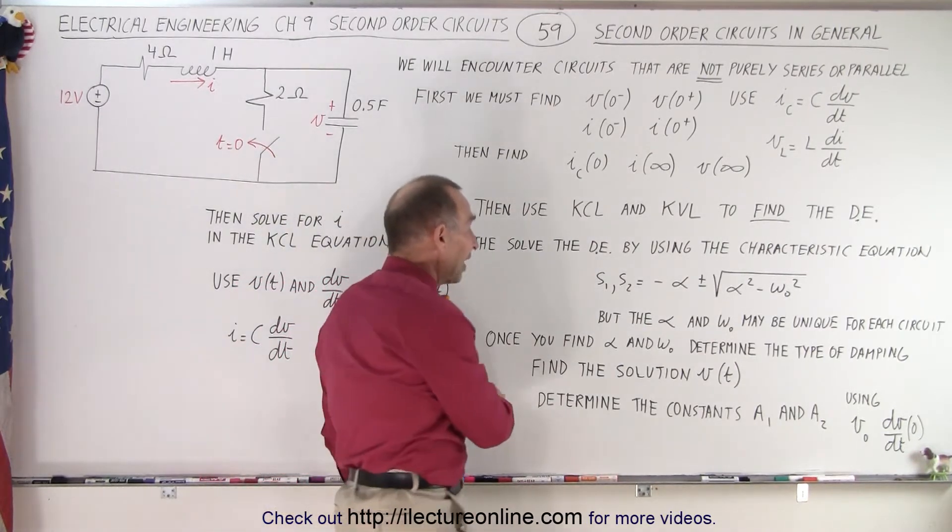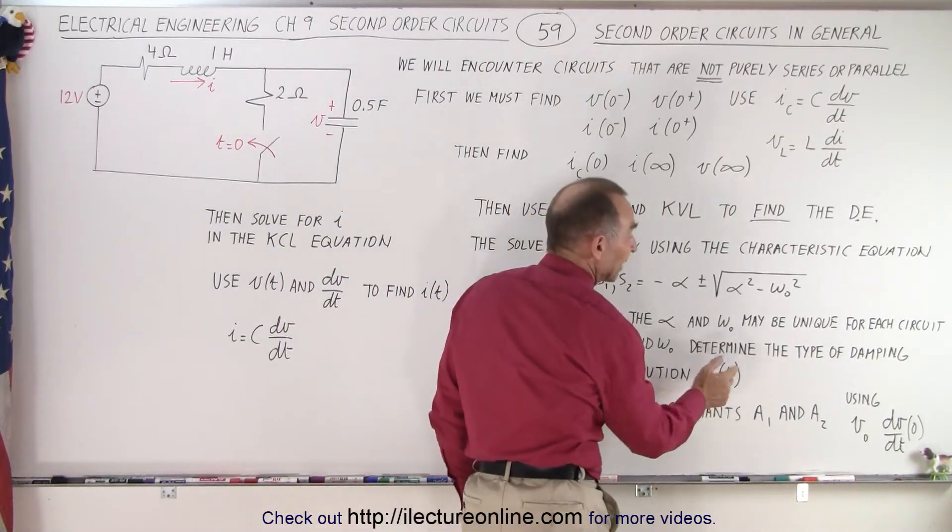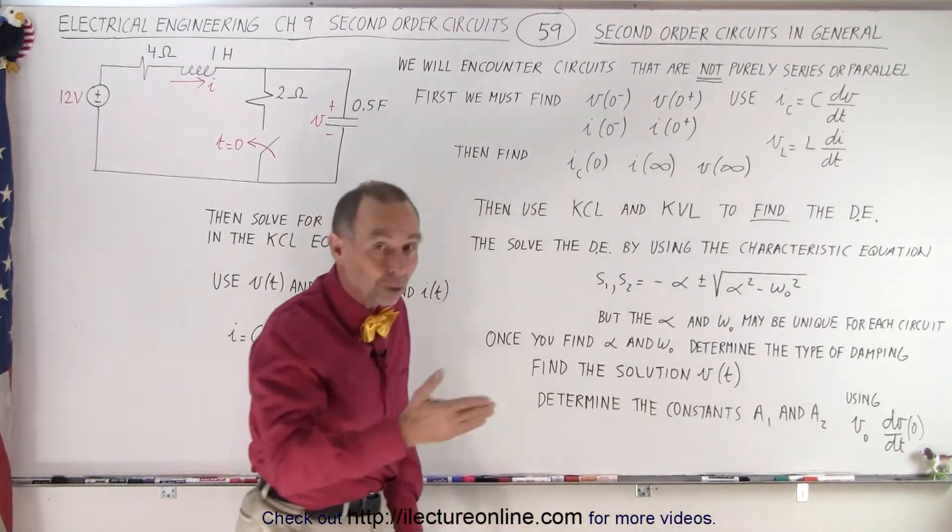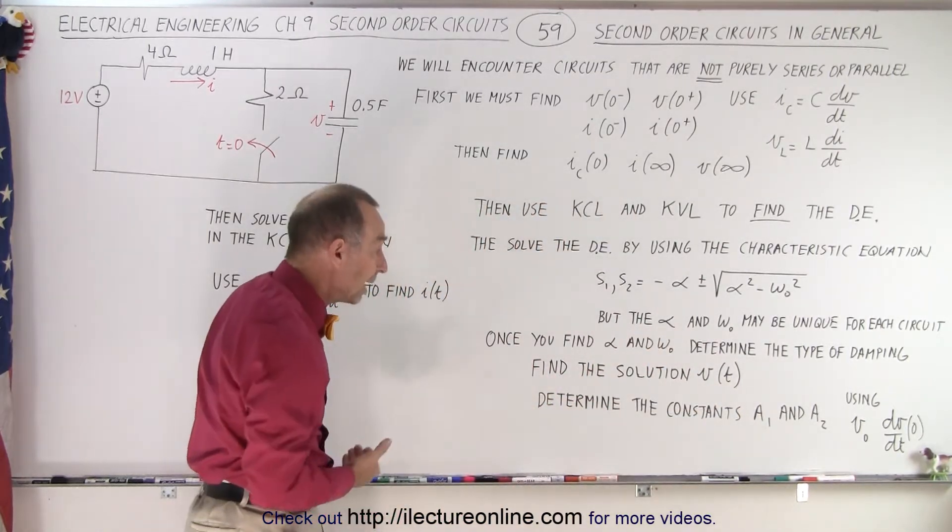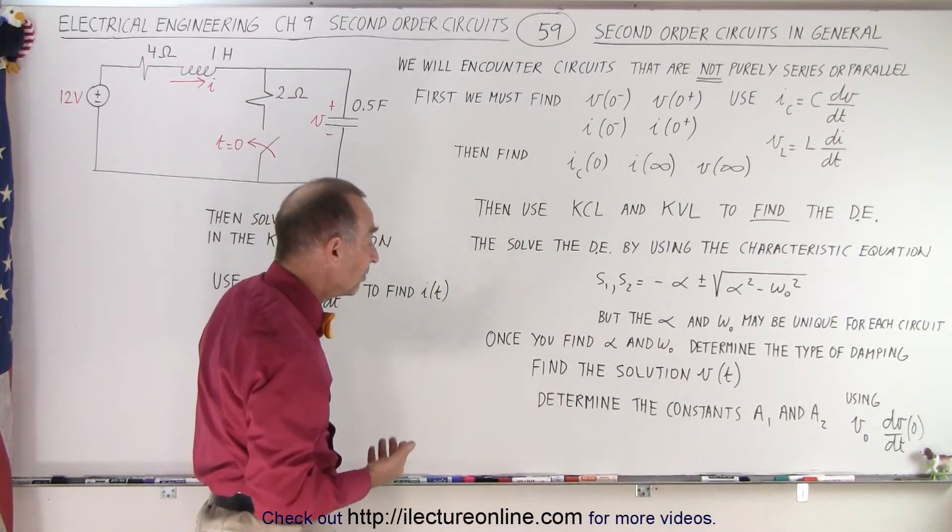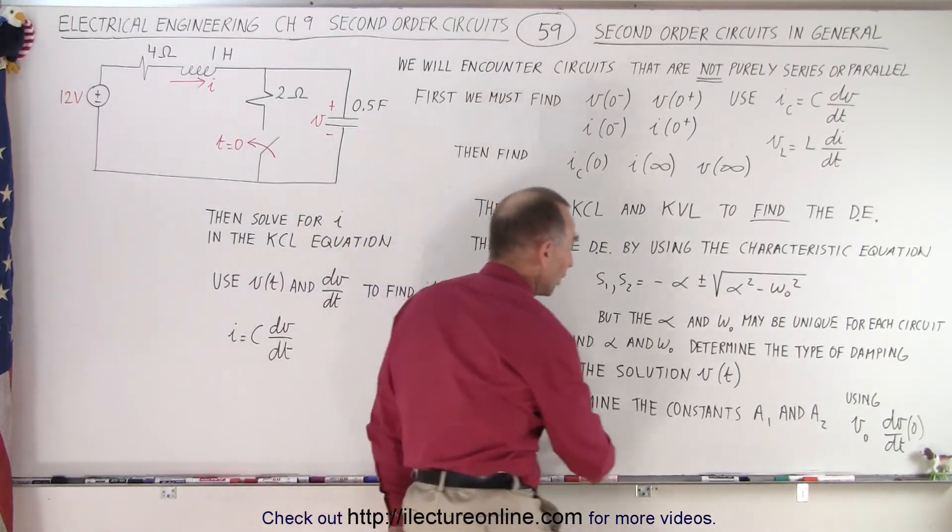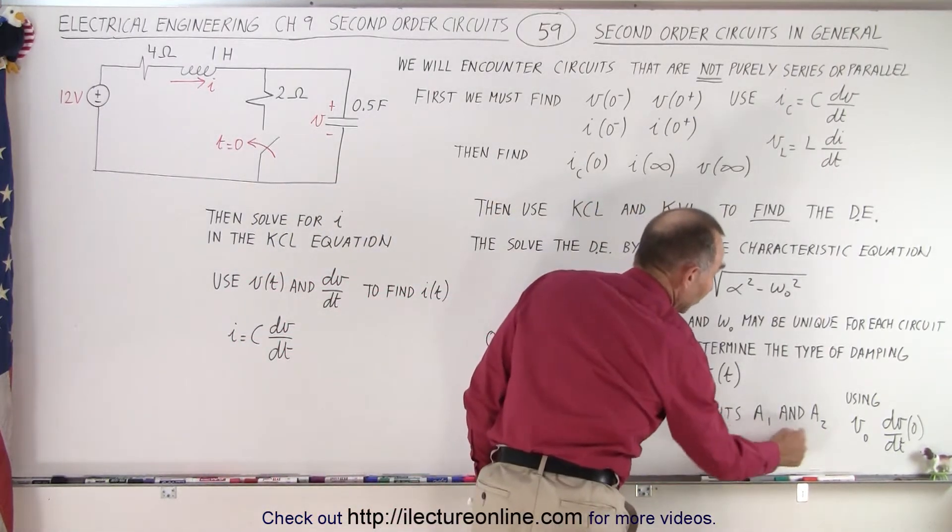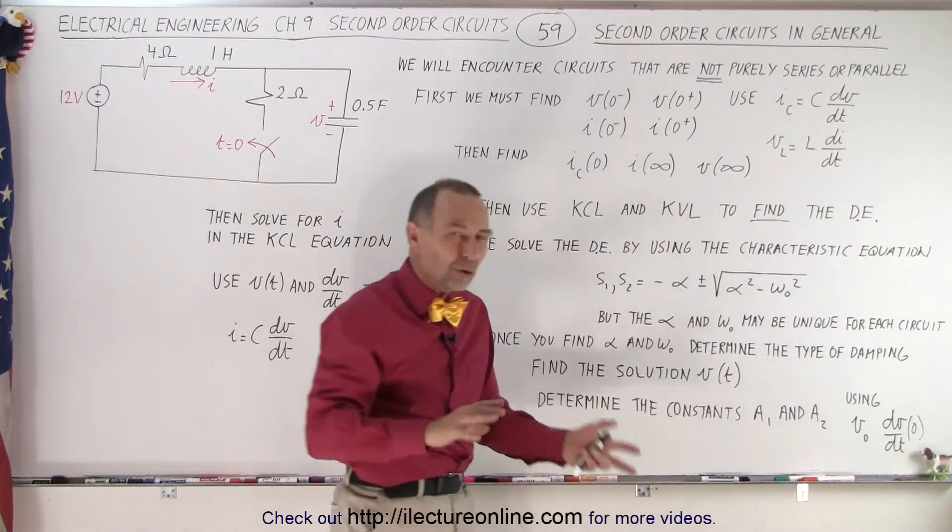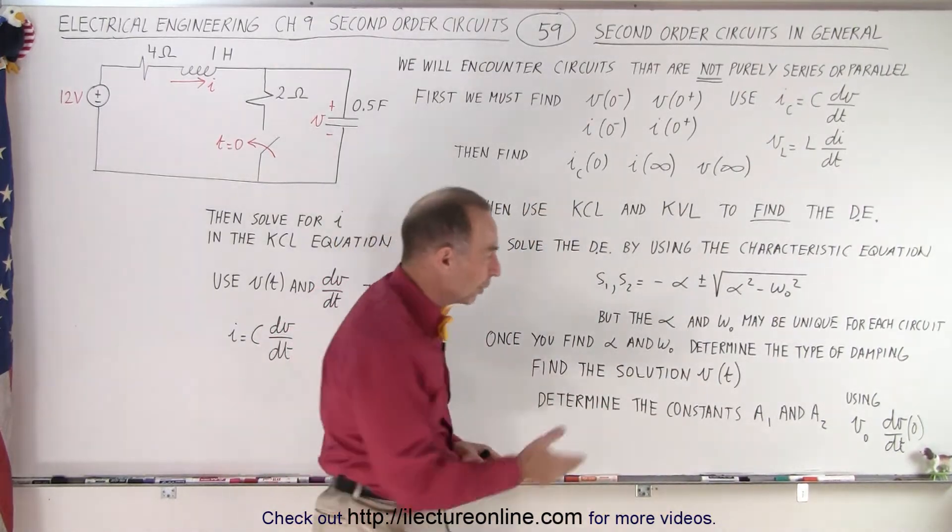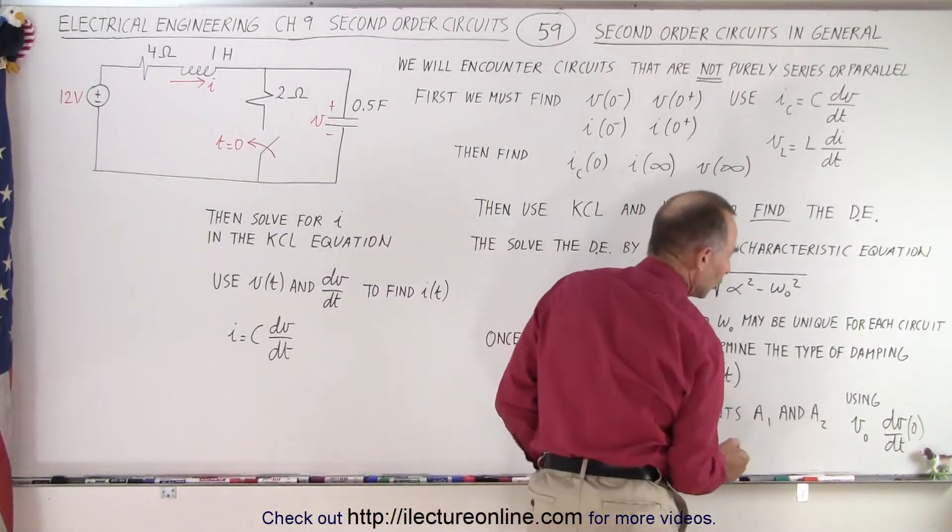once you find that, you can find the solution to the voltage. Again, we'll have either an underdamped, a critically damped, or an overdamped case. If that's the case, once we have the equation, then we have to come up with the constants A1 and A2. Typically, we use A and B because that's easier to deal with than the subscripts 1 and 2.